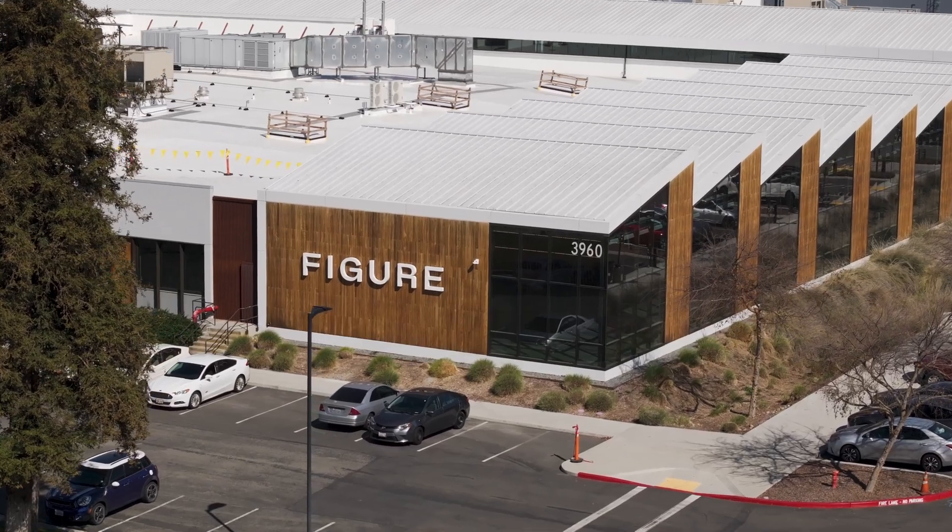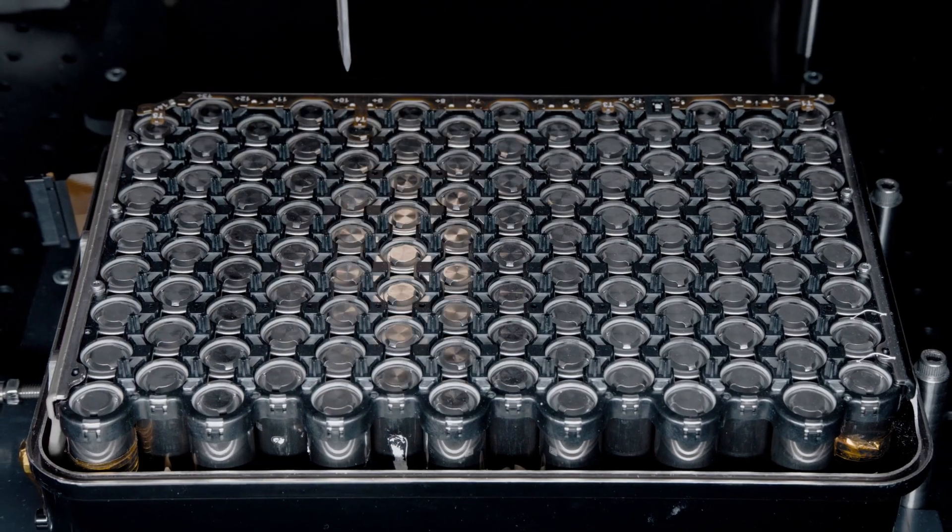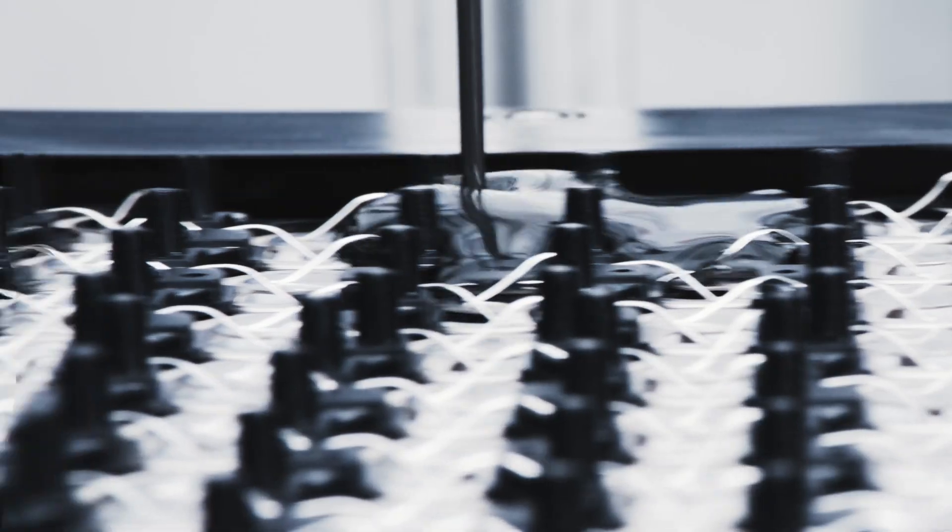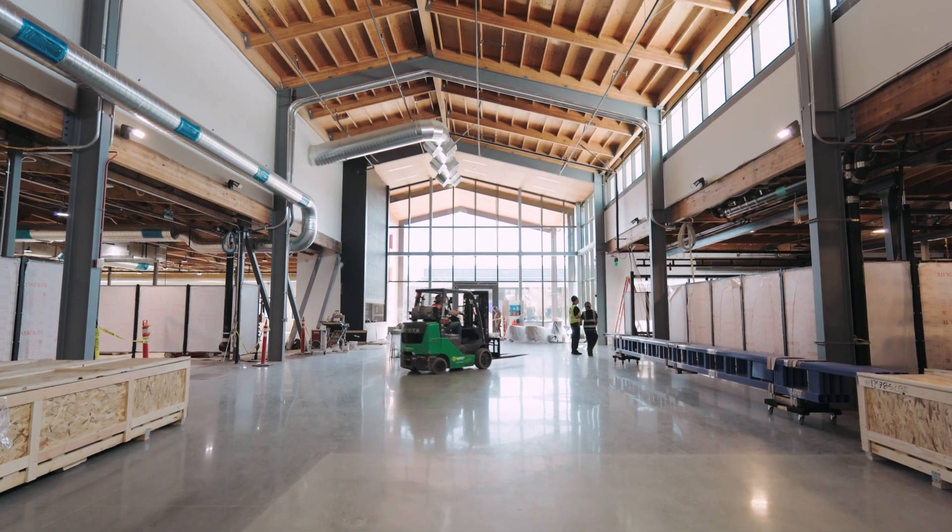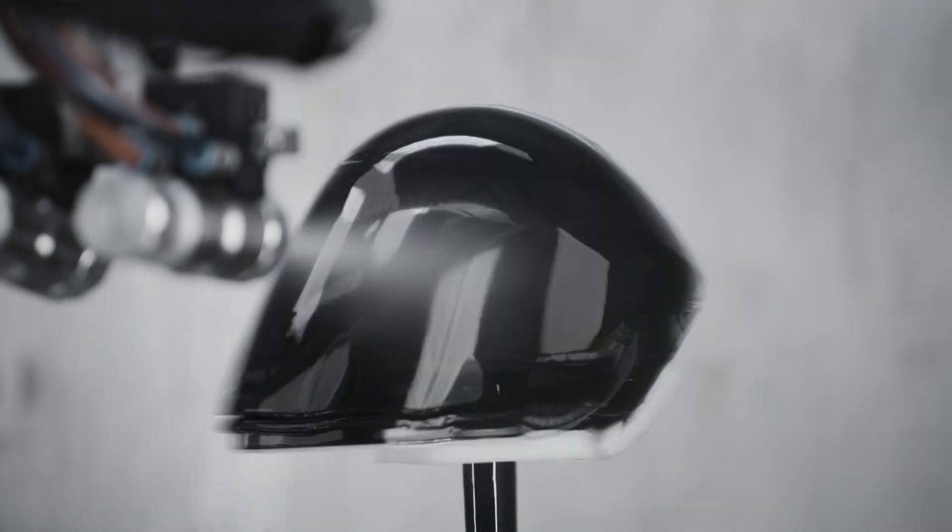To make it all possible, Figure created its own supply chain from scratch. They vertically integrated actuators, batteries, sensors, and electronics in-house, while partnering globally with suppliers who can handle strict quality and speed demands. The result is a system designed to scale fast from thousands to millions of parts under a tight ramp schedule.